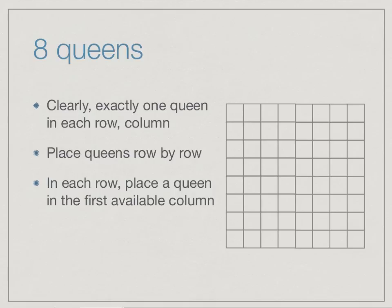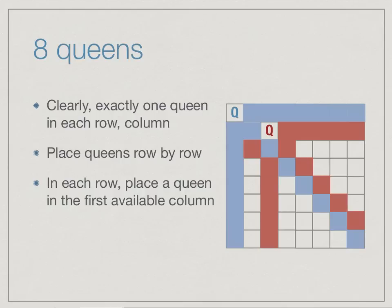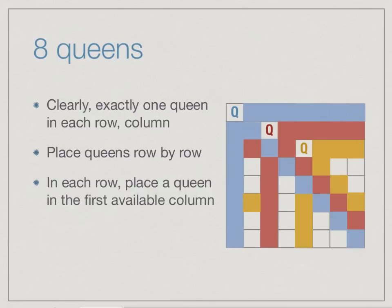We start with an empty eight-by-eight board. In the first row everything is available, so we put a queen in the top-left corner. This blocks the first row, column, and main diagonal. We move to the second row and place a queen in the first available column — the third one — which attacks another set of squares. In the third row we place a queen in the fifth column, and we continue adding queens, coloring newly attacked squares with each placement.